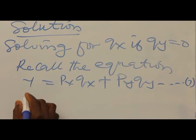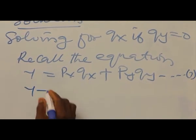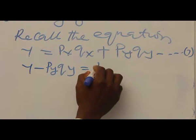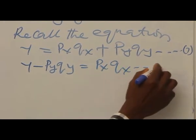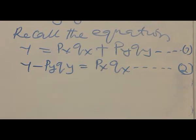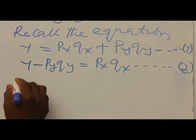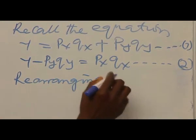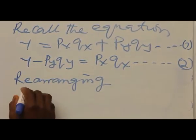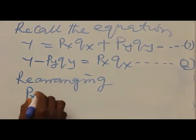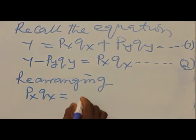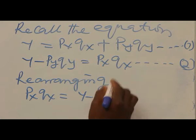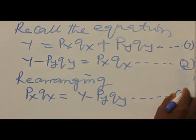So we can rewrite: Y minus PYQY equals PXQX — that would be equation 2. Now we can rearrange, so rearranging so that this will come to this side: PXQX equals Y minus PYQY. That is equation 3.